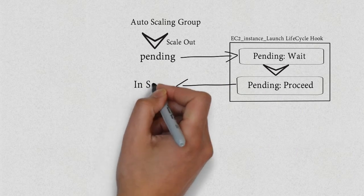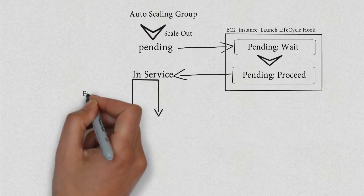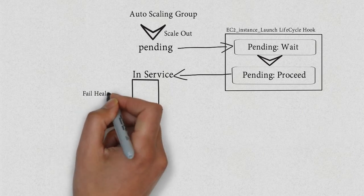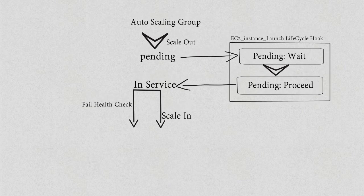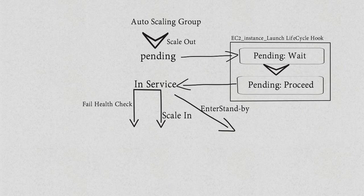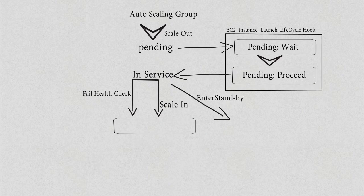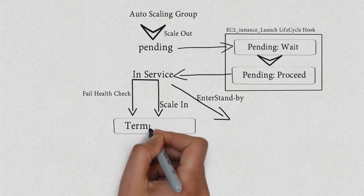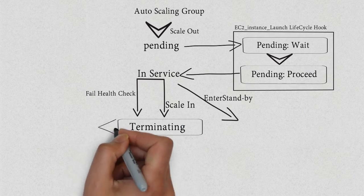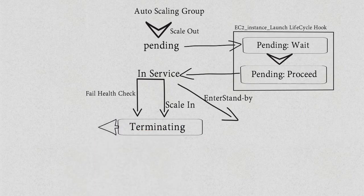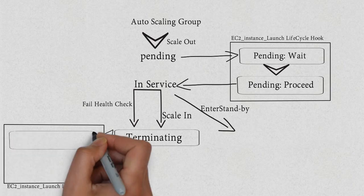In-service, there are three scenarios on which the autoscaling life cycle works. First: fail health check. Second: scale in. Third: enter standby. When the demand reduces, the EC2 instance goes into terminating mode, where it also enters a life cycle hook — which I will explain in the next tutorial.